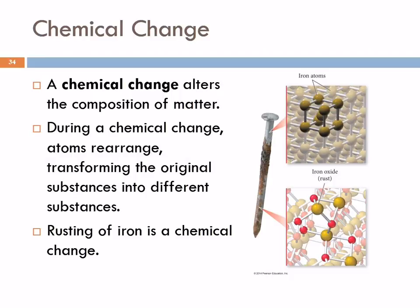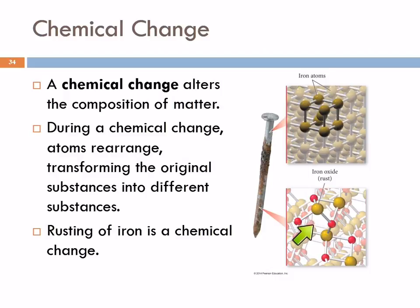In a chemical change, the actual composition of the matter changes. So if we think about rusting — here we have iron atoms in this iron nail. They're attracted to each other and the nail is nice and strong. When iron rusts, it combines with oxygen to form an iron oxide. The composition is different. It's not just iron atoms anymore; now there's oxygen in here as well. The composition has changed.